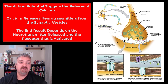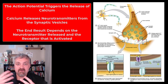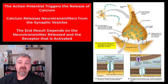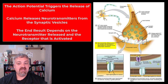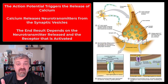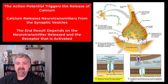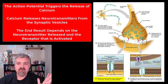Step four: neurotransmitters flood across the synaptic cleft and diffuse to bind to ligand-gated ion channels on the postsynaptic membrane. The receptor type and the resulting response are dependent on the neurotransmitter involved. Step five: the neurotransmitter binds and leads to a graded potential at the postsynaptic cell, and the cell does what it's supposed to do.